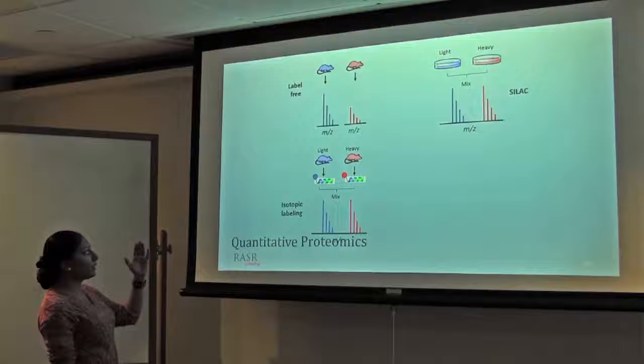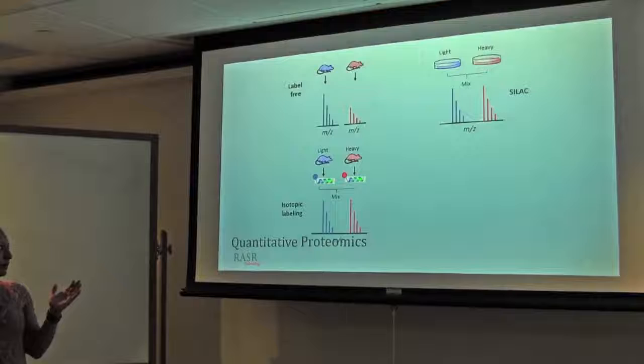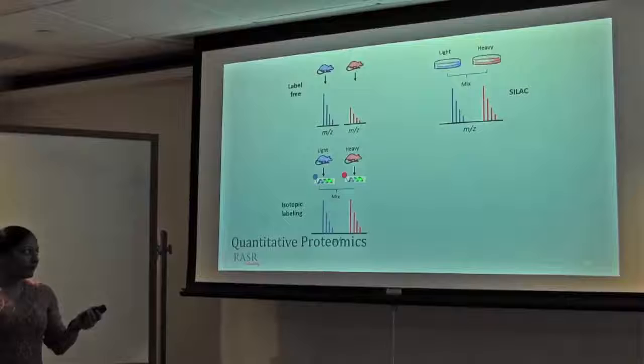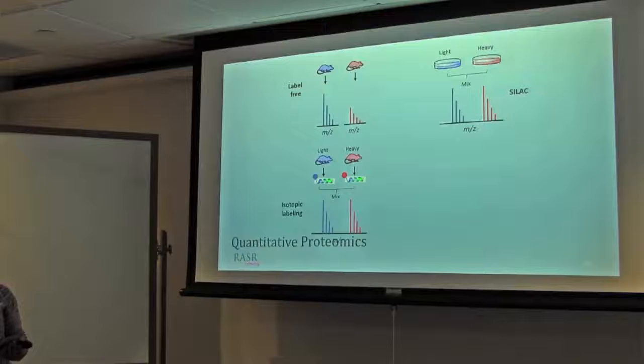An example of isotopic labeling is dimethylation, where you are adding dimethyl group at the amino end, either N-terminal or the lysine epsilon group. So this is two sample? And again, it is giving you an opportunity that you can mix more samples and analyze them together.